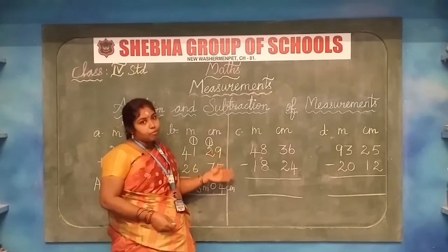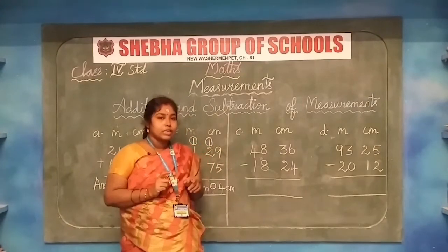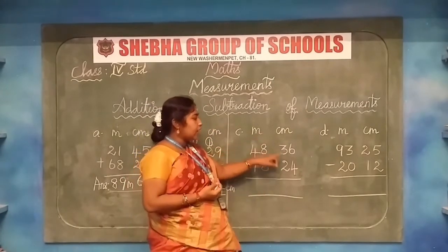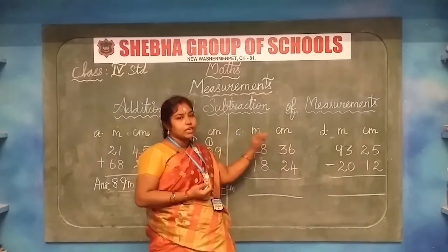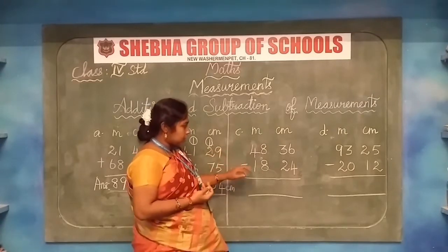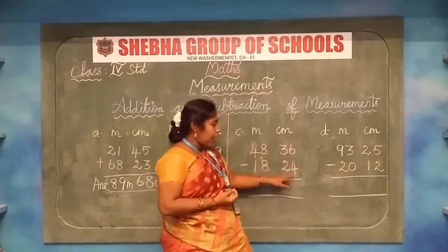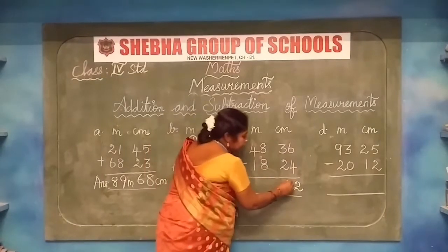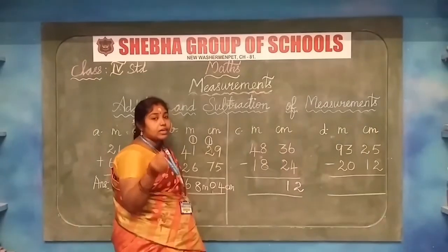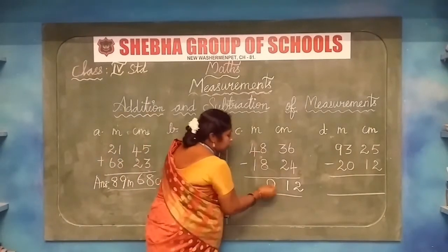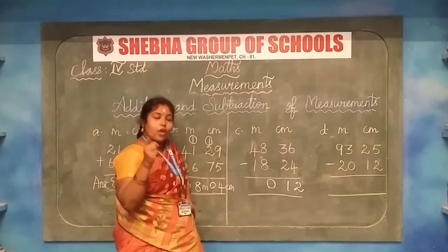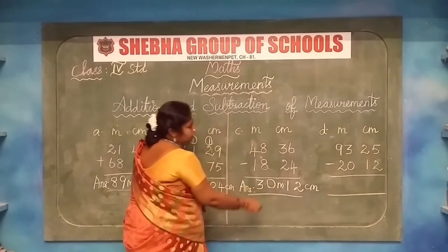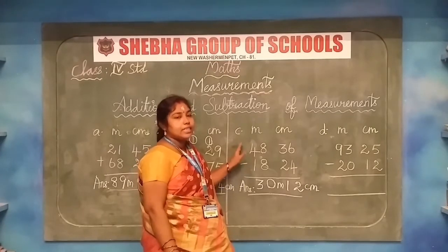Now we move on to subtraction facts in measurements. Whenever doing subtraction, you can subtract from the bottom number — it will be easier. The sum is 48 meter 36 centimeter minus 18 meter 24 centimeter. From the ones place: 6 minus 4 is 2. Then 3 minus 2 is 1. 8 minus 8 is 0. And 4 minus 1 is 3. We must mention meter and centimeter. This sum is subtraction without regrouping.